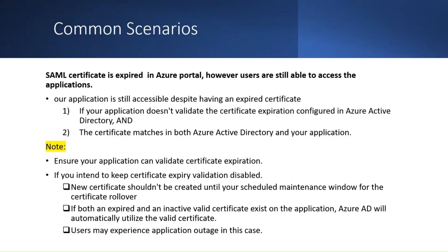Now let's take a look at a few common scenarios. Let's assume you have an application which is still accessible even though the application certificate is expired in the portal. This is possible if your application doesn't validate the certificate expiration configured in AAD and the certificate matches in both Azure Active Directory and in your application. However, if you intend to keep the certificate expiry validation disabled in your application and have both an expired and an inactive valid certificate on the application, Azure AD will automatically utilize the valid certificate, and in this case users will not be able to access the application.